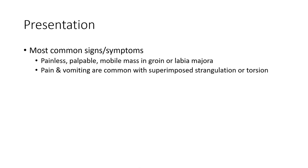The most common signs and symptoms are a painless, palpable, mobile mass in the groin or labial area. Pain and vomiting are common with superimposed incarceration or torsion.